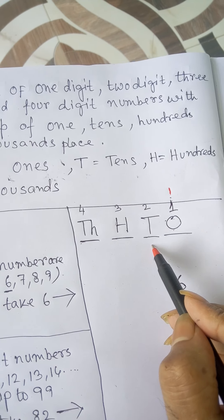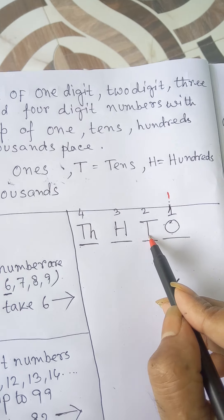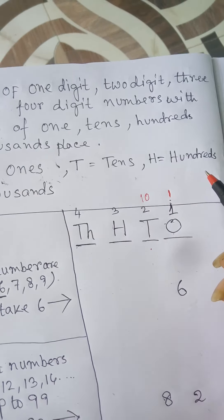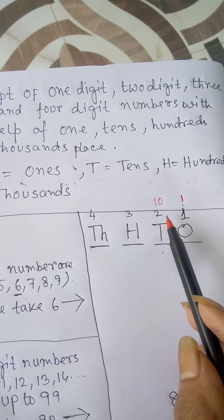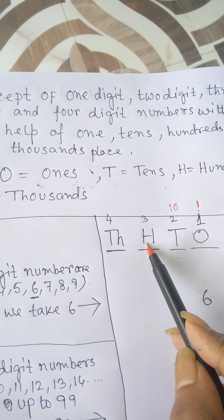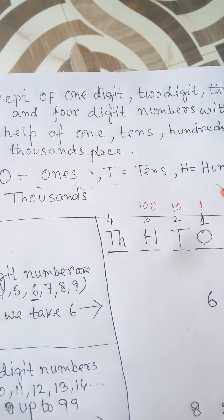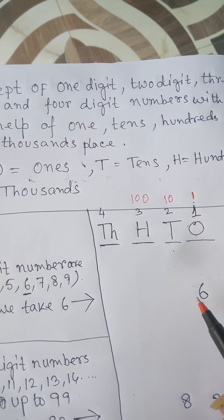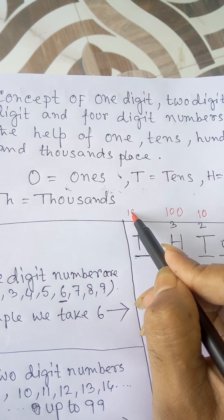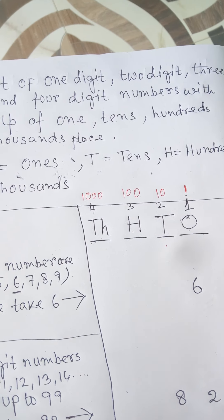The value of the tens place is 10. The value of the hundreds place is 100. And the value of the thousands place is 1000.